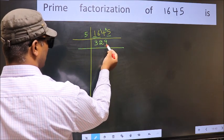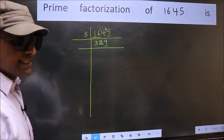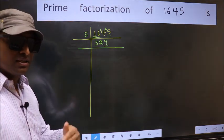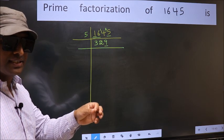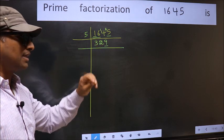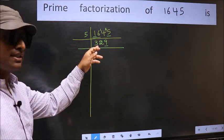Now the last digit 9 is not even, so this is not divisible by 2. Next prime number is 3. To check divisibility by 3, add the digits: 3 plus 2 plus 9 equals 14. And 14 is not divisible by 3.